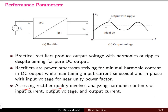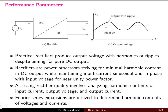Assessing the rectifier quality involves analyzing the harmonic contents of input current, output voltage, and output current. There are various performance parameters such as input voltage, output voltage, input current, output current, efficiency, and so on. Fourier series expansions are utilized to determine the harmonic content for voltage and current, since the output voltage V0 may not be pure DC and there will be some ripples present.